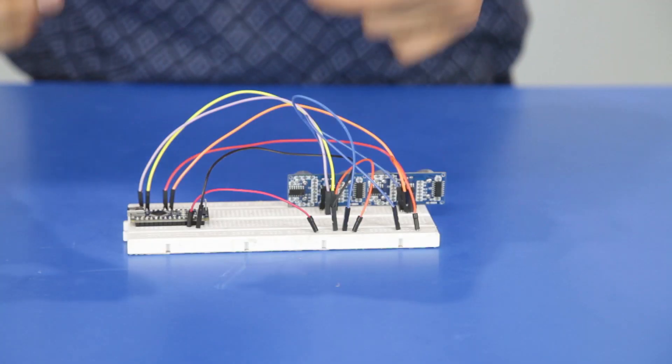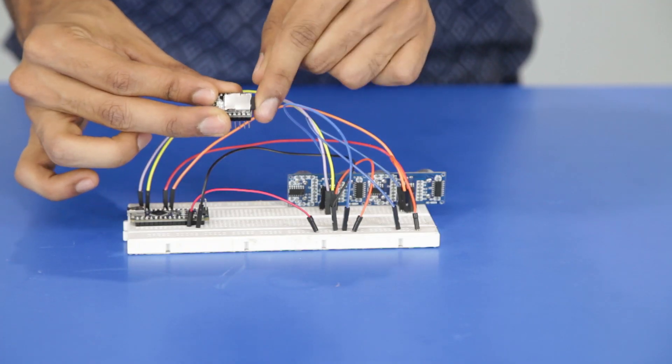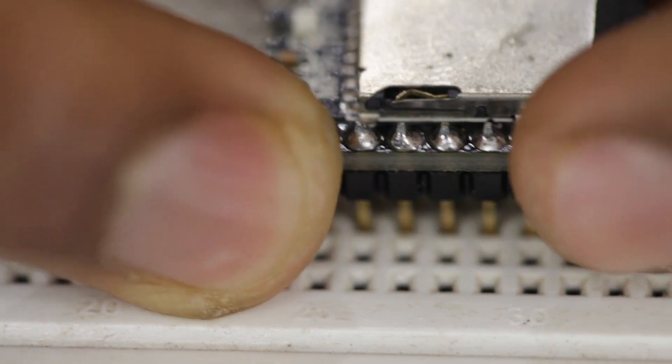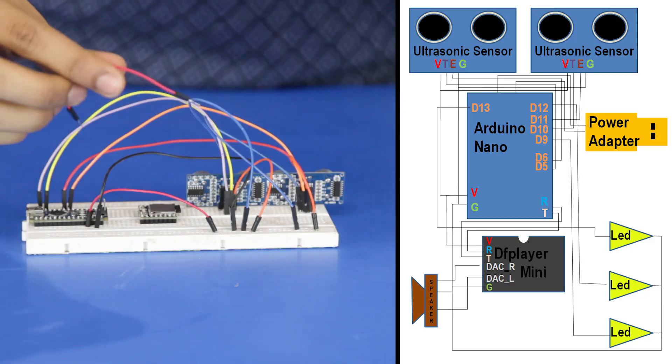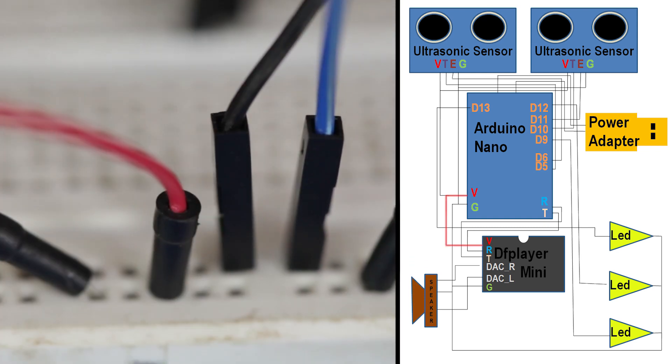For the audio output we require a DF player mini. Insert a micro SD card containing the audio track. Connect VCC of the player to the 5V rail of the breadboard and ground to the ground rail of the breadboard.